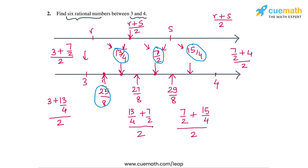So 25 by 8, 27 by 8, and 29 by 8 are three other rational numbers that lie between 3 and 4. The six rational numbers found between 3 and 4 using the midpoint approach are 25 by 8, 27 by 8, 7 by 2, 13 by 4, 15 by 4, and 29 by 8.